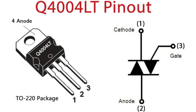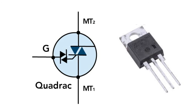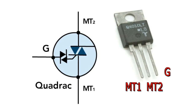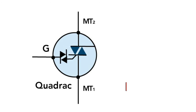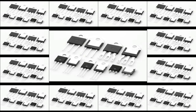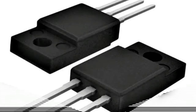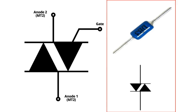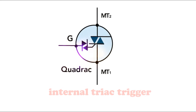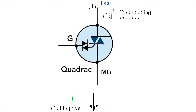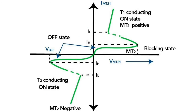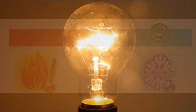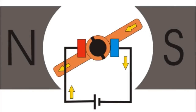The Quadrac is a three-pin semiconductor device featuring MT1 (main terminal, usually the anode), MT2 (main terminal, usually the cathode), and a gate terminal. Quadrac is available in different types depending on switching voltage and current requirements. Essentially, it is a combination of a DIAC and a triac on a single chip, also called an internal triac trigger. Quadrac is controlled by the gate with any polarity of main terminal voltage, making it suitable for applications such as heater control, lamp dimmer, and AC motor speed control.